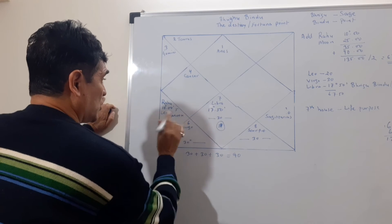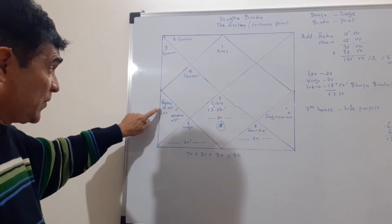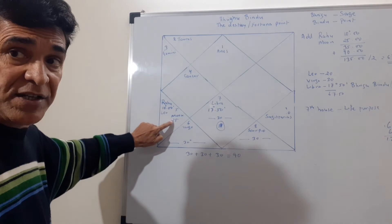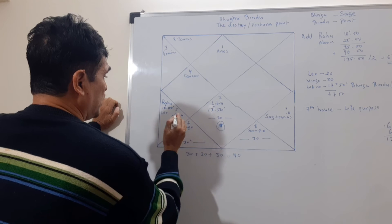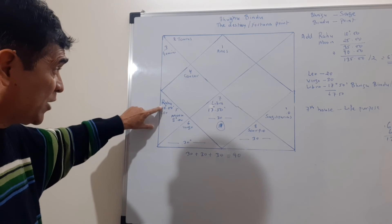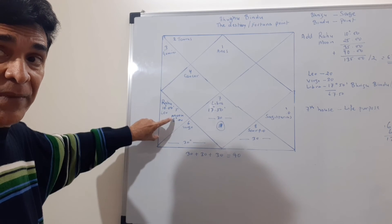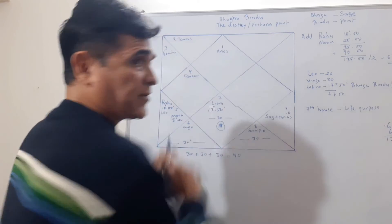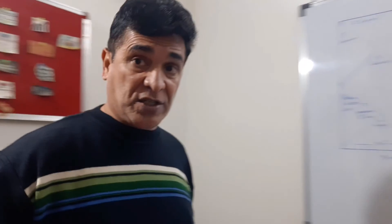Suppose Moon was at 25 degrees here. Rahu goes from 10 to 25 — that is straightforward. But what if we interchange it — Moon is at 8 degrees and Rahu is at 10 degrees? Rahu cannot go from 10 degrees to 8 degrees directly, so you have to go all the way around and find the Bhrigu Bindu, which may fall somewhere on the opposite side. The simplest way is: use the software. You can find free apps online — just type 'Bhrigu Bindu calculator,' put in your date of birth, time of birth, and place of birth, and you'll have your Bhrigu Bindu right there.